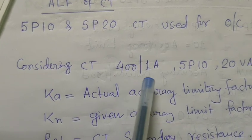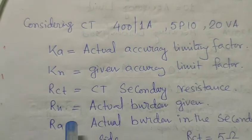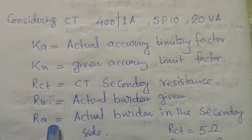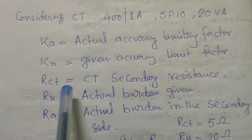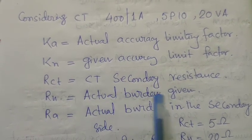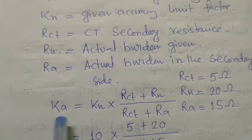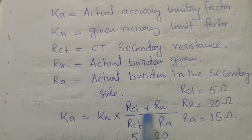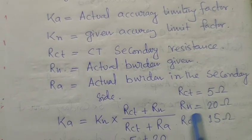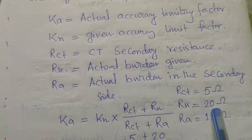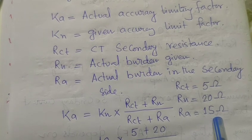Considering a CT of 400/1 ampere, 5P10 and 20 VA. Here are the factors used for CT design calculations. K is the actual accuracy limiting factor; KN is the given accuracy limiting factor; RCT is the CT secondary resistance; RN is the rated (given) burden; RA is the actual burden in the secondary circuits. As per the formula: K = KN × (RCT + RN) / (RCT + RA). RCT is 5 Ohm, RN (given burden) is 20 Ohm, and RA (actual connected burden) is 15 Ohm.